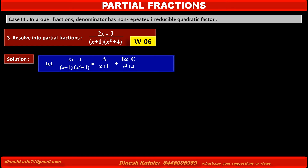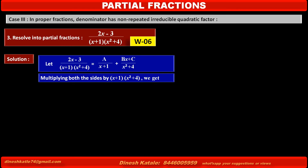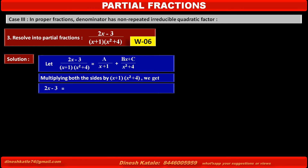To remove the denominators of each term, multiply both sides by their LCM (x plus 1)(x squared plus 4). We get: 2x minus 3 equals A(x squared plus 4) plus (Bx plus C)(x plus 1).